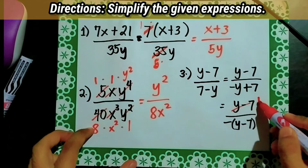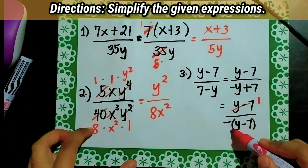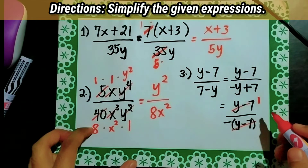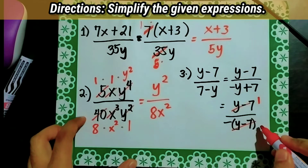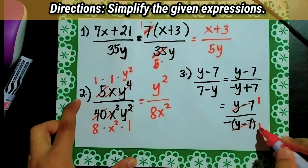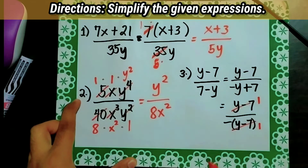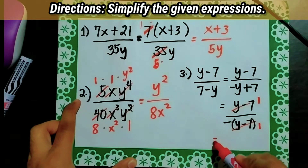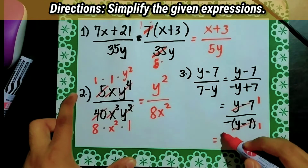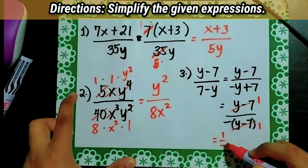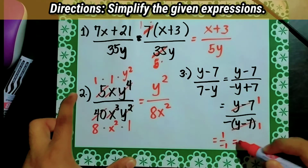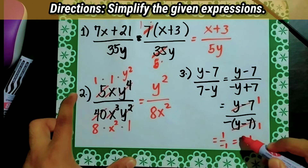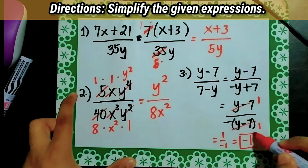y minus 7 will become 1, and y minus 7 in the denominator also equals 1. So our final answer is 1 over negative 1, which equals negative 1.